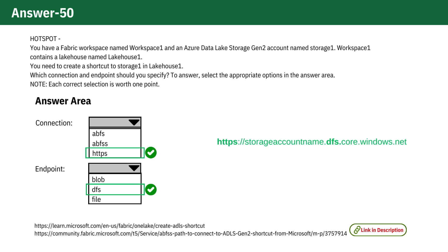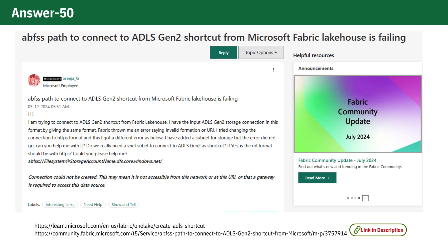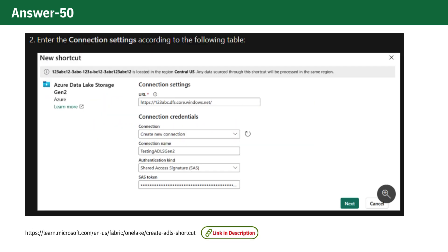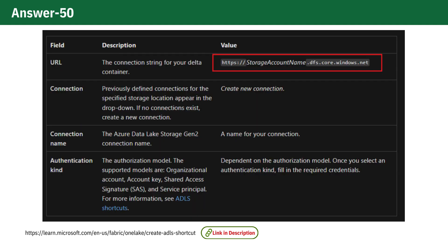If you initially thought ABFS or ABFSS were correct for connections to Azure Data Lake Storage Gen 2 within Fabric, it's important to note that despite ABFSS typically being used for secure connections, it encounters issues in Fabric. There have been instances reported within the Fabric community where users experienced errors when using these protocols, leading to the recommendation of using HTTPS instead.